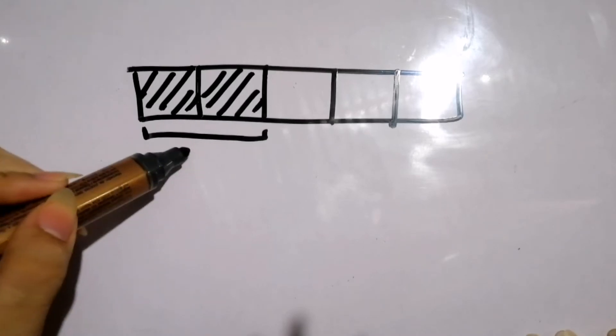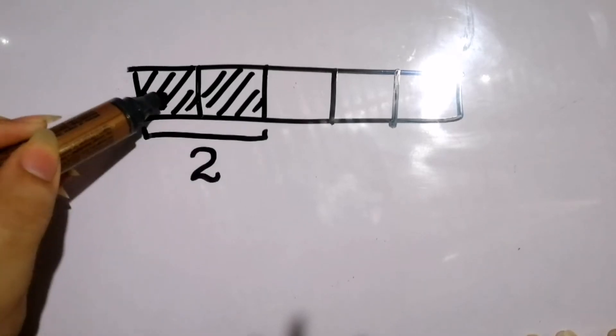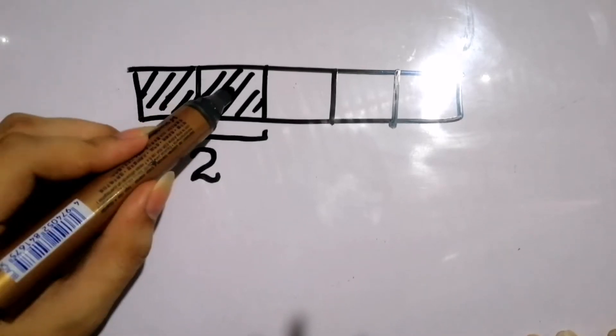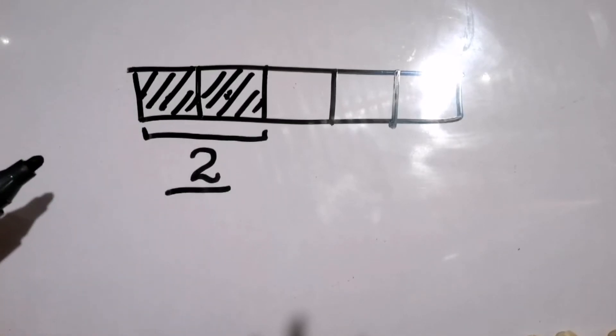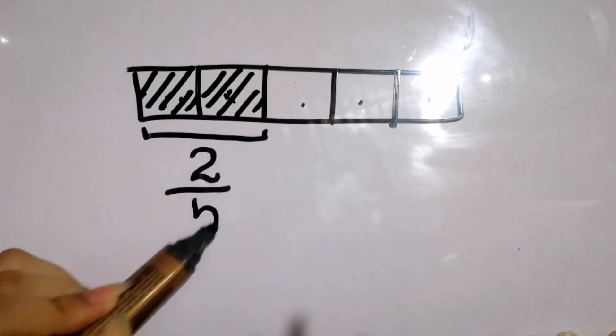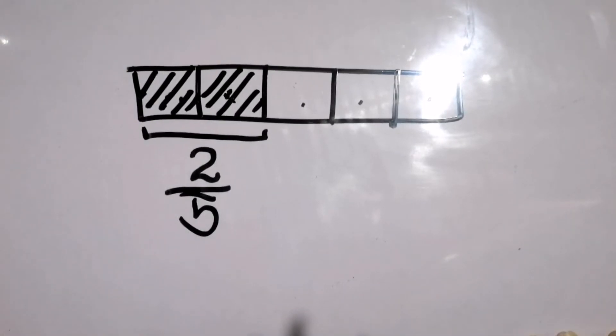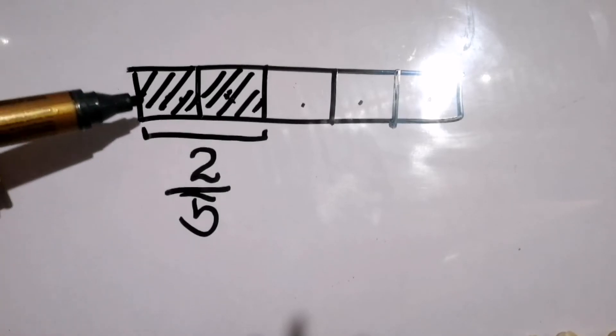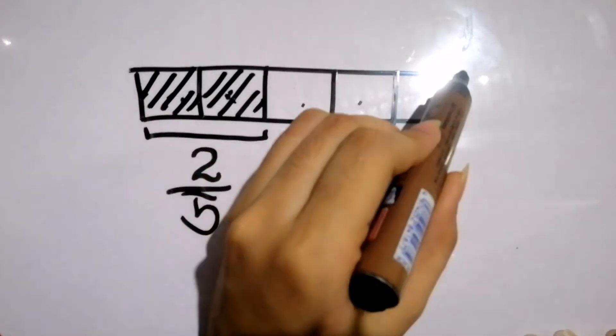The fraction that will represent this part that you have taken is two, because we have two pieces or two parts, out of or over the total number of pieces that the whole was divided into, which is five. Therefore you took two-fifths of this piece of wood.